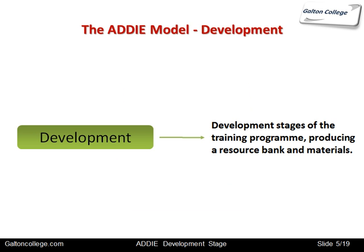The development stage in the training program is producing a bank of material — the idea here is developing the program. It's been designed in the second part; this is the third part. Now it's a question of development: acquiring the resources and putting together the program in a way which is consistent with the design and which will meet the objectives of the program.